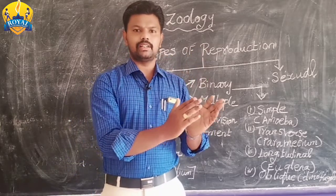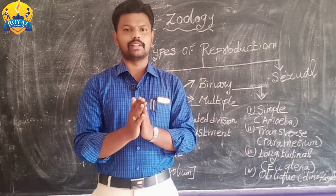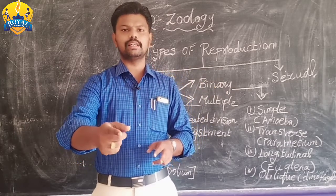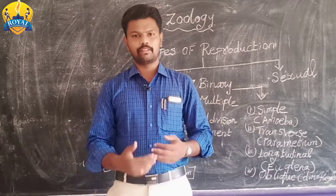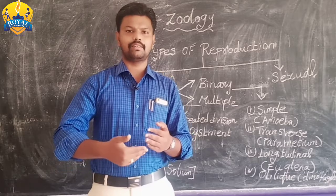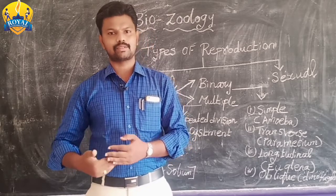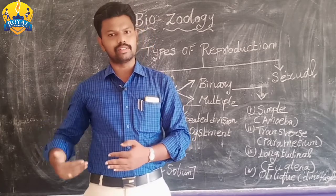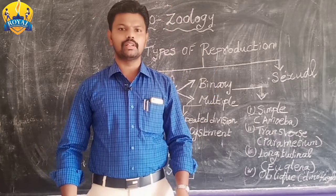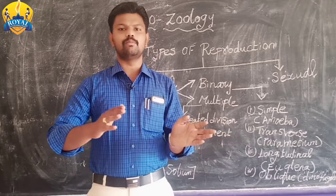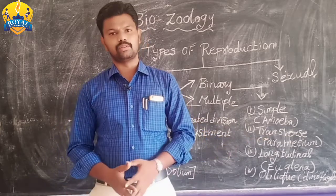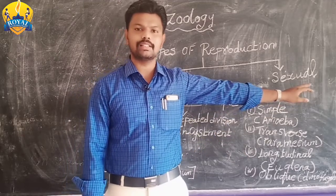Both nuclei are fused together to produce the diploid zygote. From the zygote, cell division occurs, followed by gastrulation, blastulation, and organogenesis — development of all the systems. The new baby will come out from the female uterus. This is the outline process for sexual reproduction. In this class, we are discussing the asexual method of reproduction.